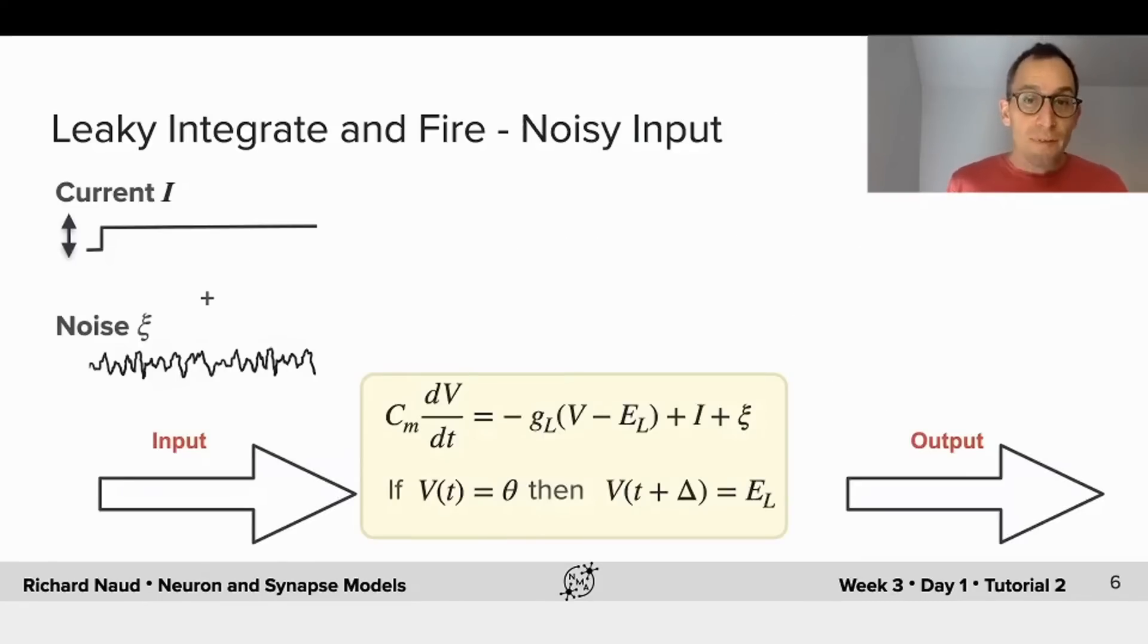Now, what happens if there is noise on top of this? Imagine that it's not just a mean input, but there are fluctuations that might have to do with the fact that there's not always exactly the same number of inputs at any moment of time stimulating that neuron.